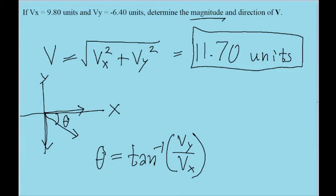So let's do that, let's put our y component, negative 6.4 units, into the top here, and our x component, 9.8 into the bottom. And we will get, from our calculators, a value, if you have it set to degrees, we'll have a value of negative 33.1 degrees.